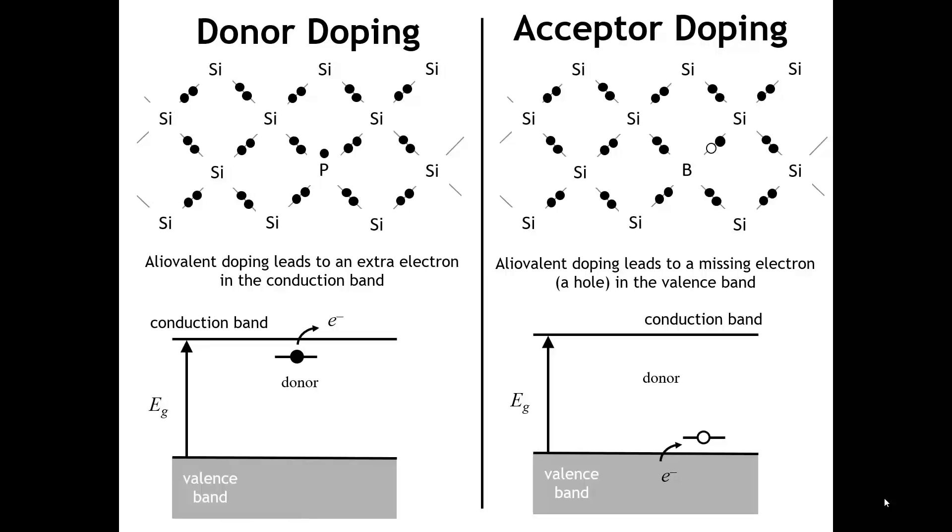So if we want to get meaningful concentrations of charge carriers, that's done through a process called doping. We're going to replace the host atoms with an alleovalent dopant. So we could use an alleovalent dopant like phosphorus, which has one more valence electron than silicon. And in the localized picture, it means that we have an extra electron that's not needed to satisfy the local bonding requirements.